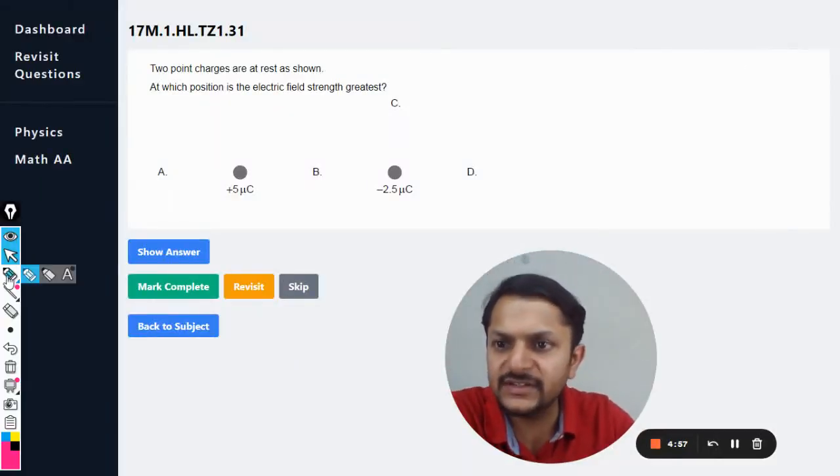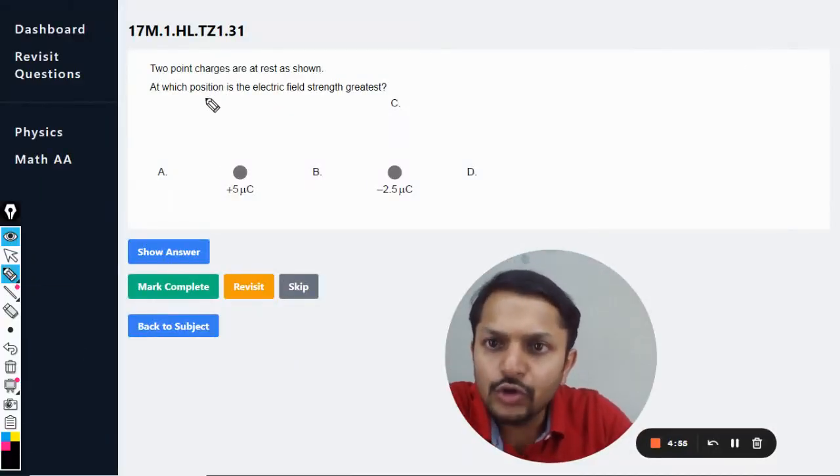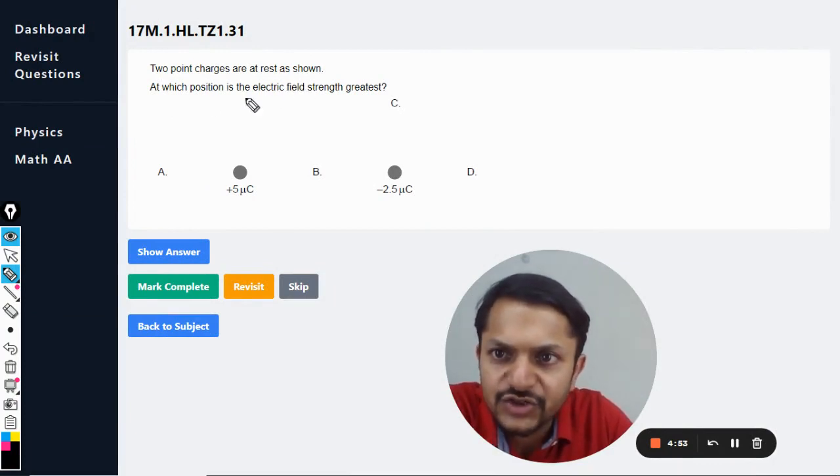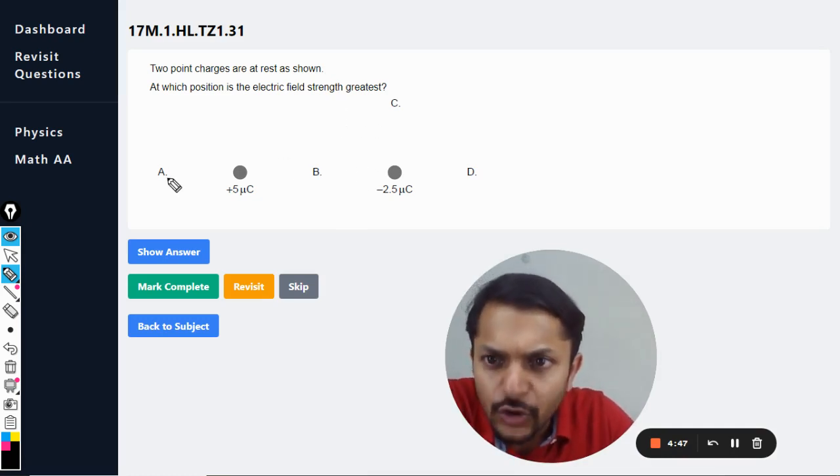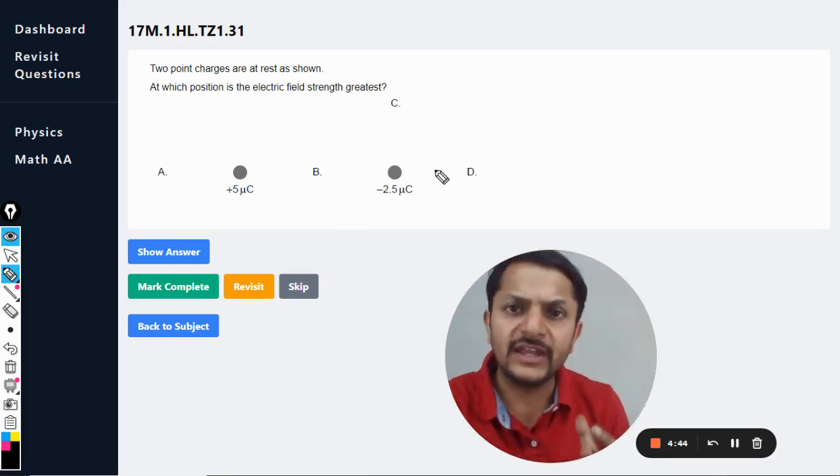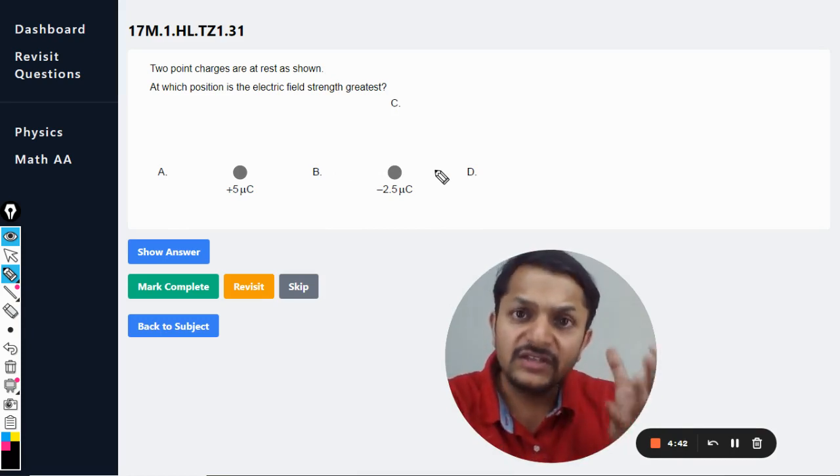Okay, dear students, let us see what is there in this question. Two point charges are at rest as shown. At which position is the electric field strength greatest? These are all the points A, B, C, and D, and we are supposed to find at which point there is a possibility of having the maximum electric field.